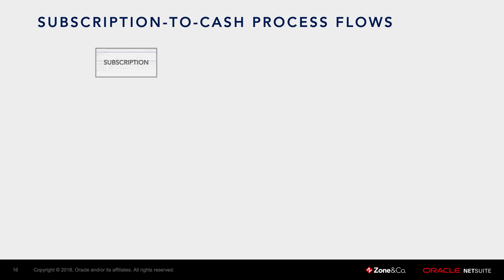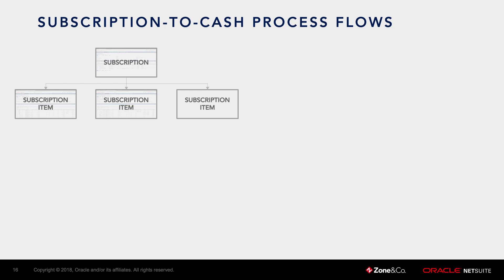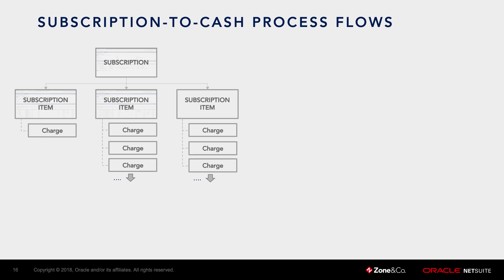As child records to the subscription, we have what's called subscription items, which represent the different components or performance obligations that are part of that contract. A good example is contracts that consist of an upfront implementation or setup fee, a fixed monthly or quarterly charge, and a third variable item based on consumption. Within these subscription items, you configure all the pricing and billing settings. Depending on that configuration, we generate what are called charges, which ultimately become line items on an invoice or sales order.